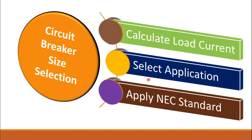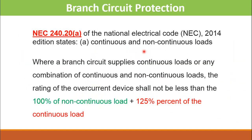Selecting the type of application means identifying which type of load we require protection for. For example, there are resistive loads such as lighting and resistors, and there are inductive loads such as motors. Once we select our application, the last step is to apply the NEC standard, which classifies the selection of circuit breaker according to the type of application. In this video we will learn how to size the circuit breaker for resistive loads, or loads other than motor loads.